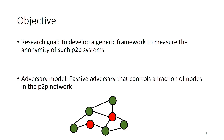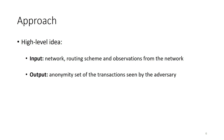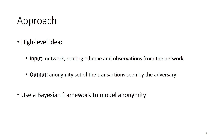We consider a passive adversary which controls some of the nodes in the peer-to-peer network. The framework takes as input the network structure, the routing scheme employed by the peer-to-peer mechanism, and the observations taken from the network, such as transactions. It outputs, for all transactions seen by the adversary, the potential anonymity set or its value. We convert this high-level idea into a framework using Bayesian probabilities.